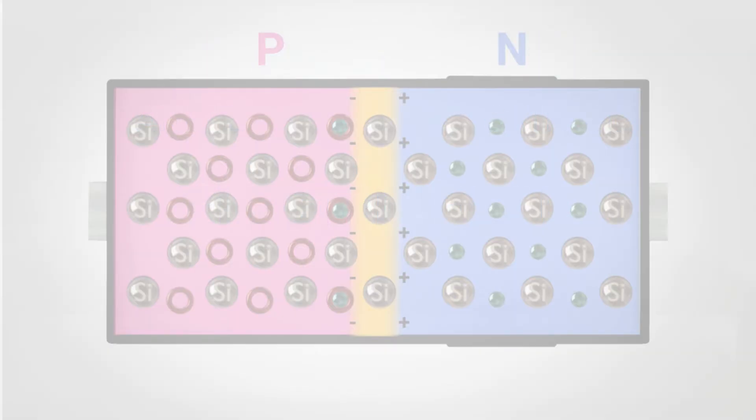This electric field causes the generation of another current, the drive current, which will try to balance the previous diffusion current.